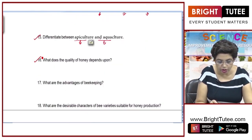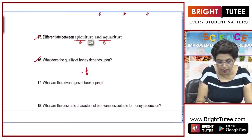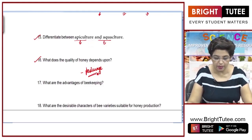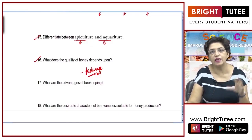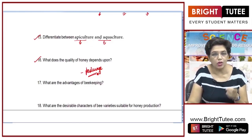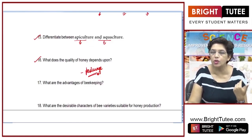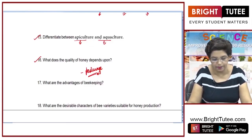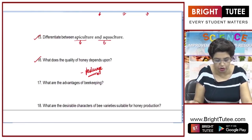Next question: what does the quality of honey depend upon? The quality of honey depends upon the pasteurage available around the apiaries, because honeybees collect nectar from flowers and convert it into honey. The quality and taste of honey depends upon the quality of flowers growing around them — that is called pasteurage.